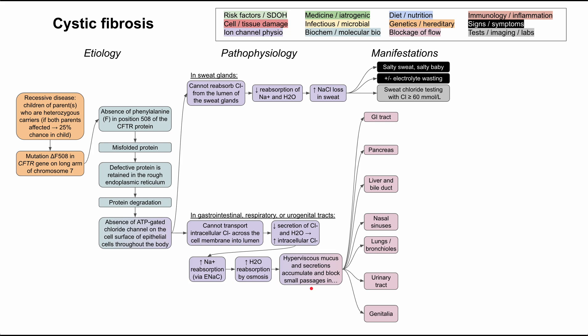One last time, it's important to emphasize the difference: in the sweat glands, you end up with too much salt in your sweat. In the other tracts, you're not able to secrete salt into those tracts, meaning the water that would normally follow the salt and dilute the hyperviscous mucus is not there. You end up with very thick mucus because you're not able to insert water and salt into it.